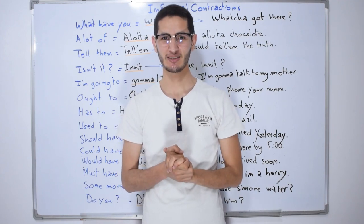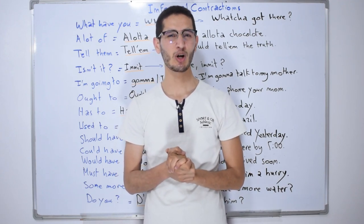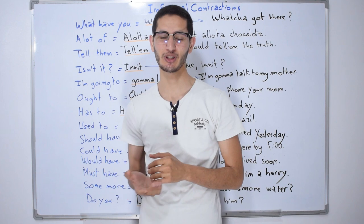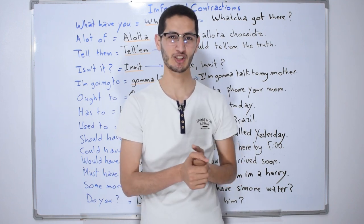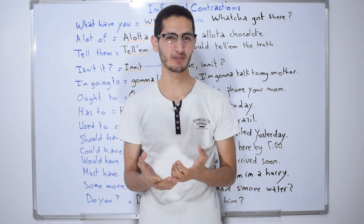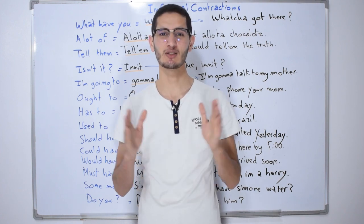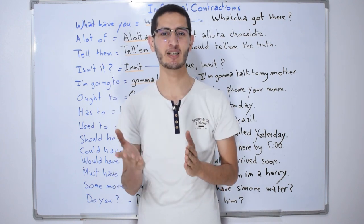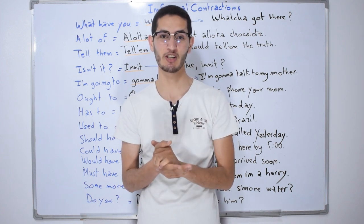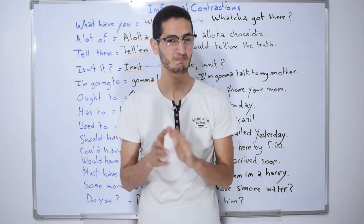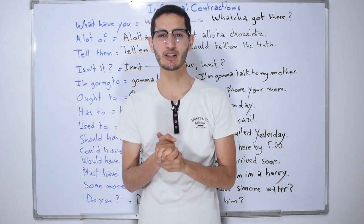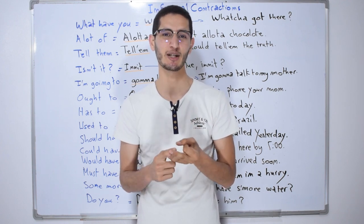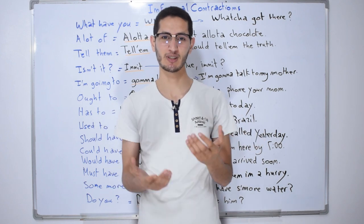Hi everybody and welcome to a new lesson on English Online. Today we're going to talk about contractions — not the formal ones you might be familiar with, but informal contractions. The word 'contract' means to squeeze together, and contractions are words made shorter by placing an apostrophe where letters have been omitted or deleted. Informal contractions can help us sound more fluent and natural, like native speakers, and feel more confident using English.